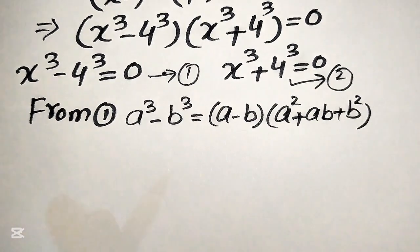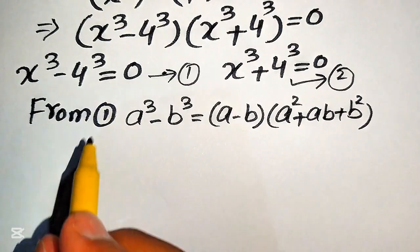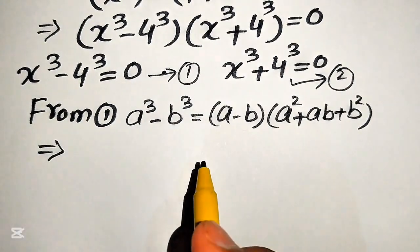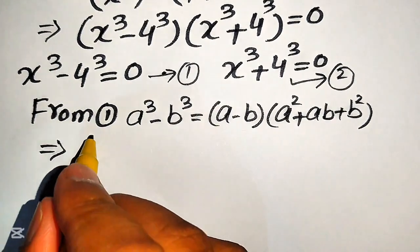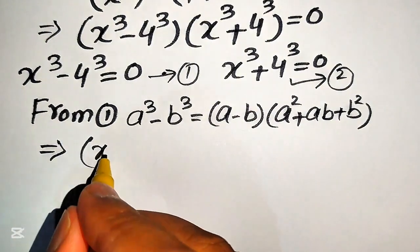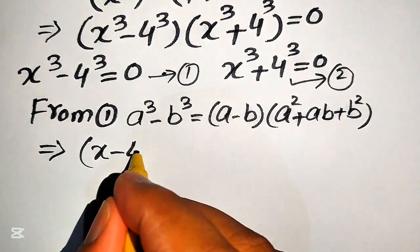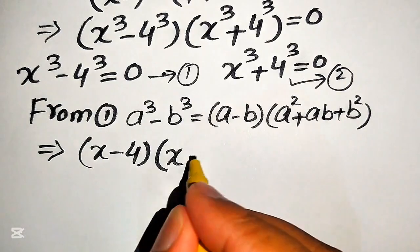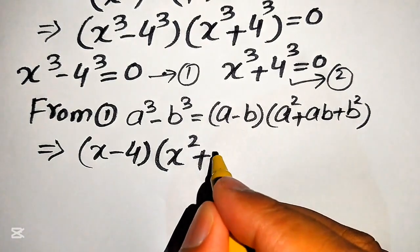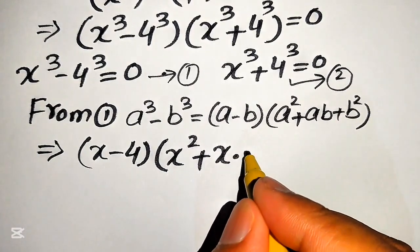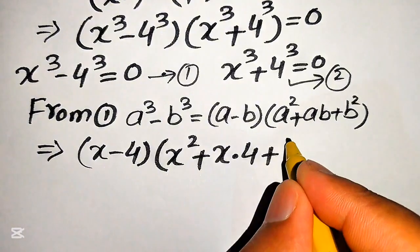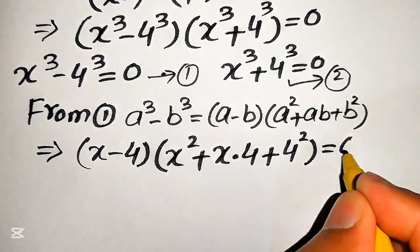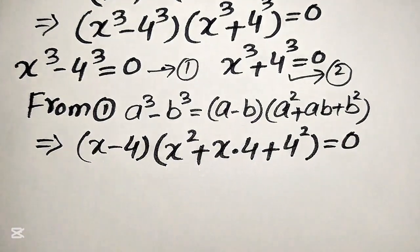Applying this formula to equation number 1, where a is x and b is 4, we get: x minus 4 times of x squared plus x times 4 plus 4 squared, and this whole equation equals to 0.